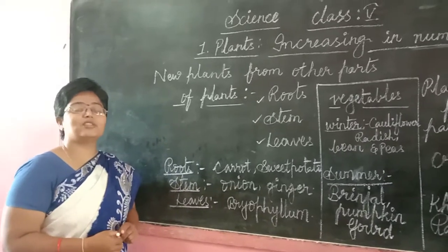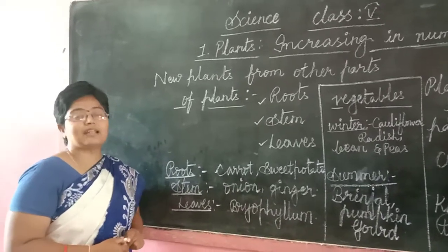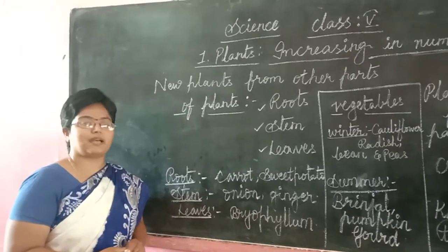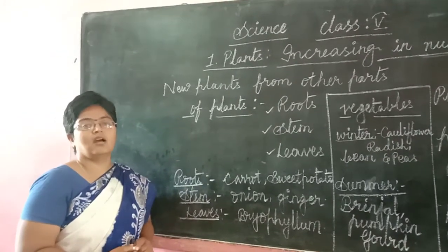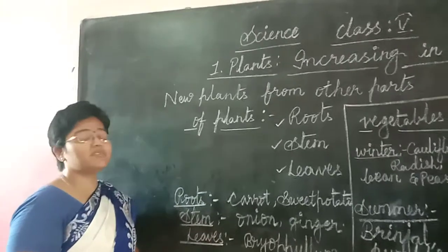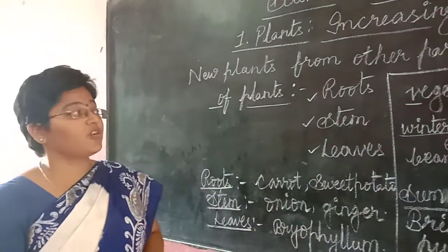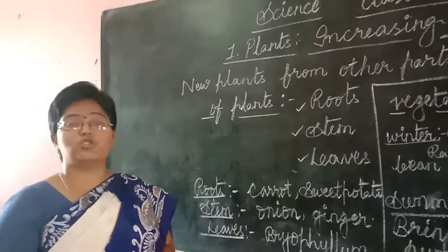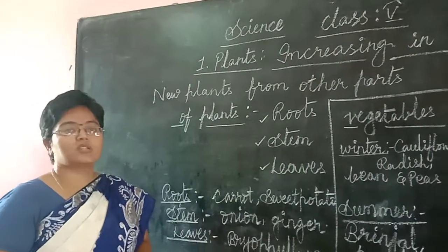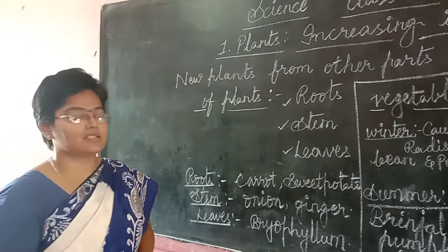Today we have seen about getting new plants from seeds and different types of methods which are followed to make new plants, like stem grafting or stem cutting and so on. Today we are going to see about how the parts of plants produce new plants from their parts. So let us get into the lesson and know more about that.